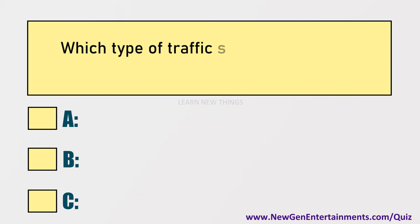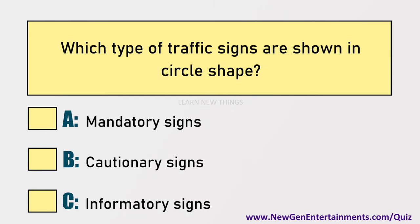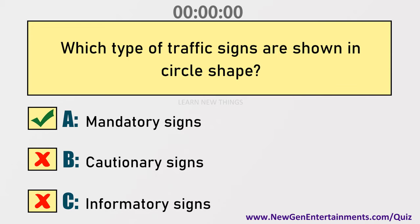Which type of traffic signs are shown in circle shape? Options are: A) Mandatory signs, B) Cautionary signs, C) Informatory signs. Answer: Option A, Mandatory signs.